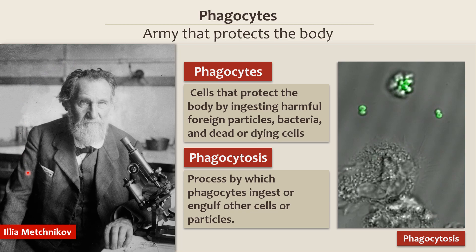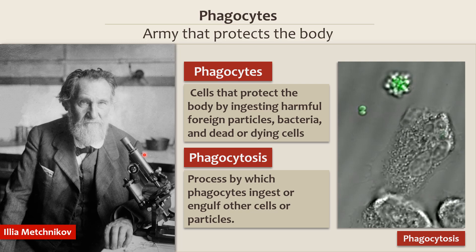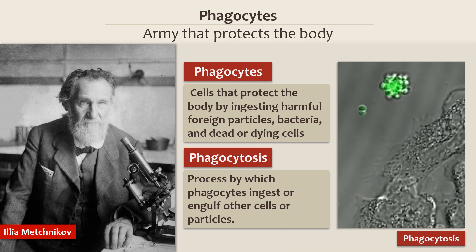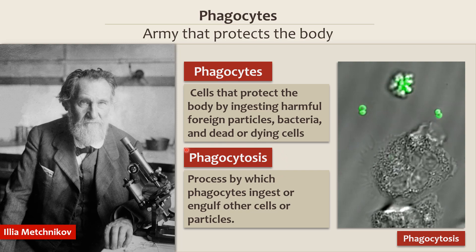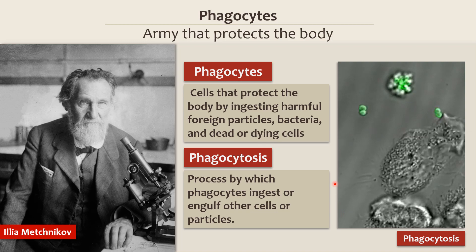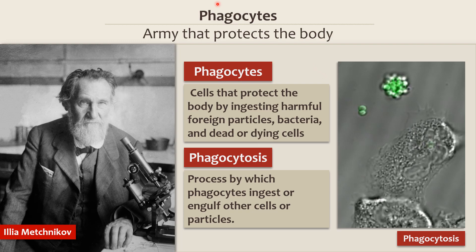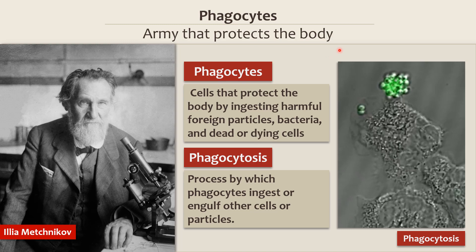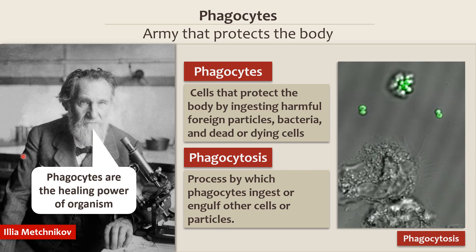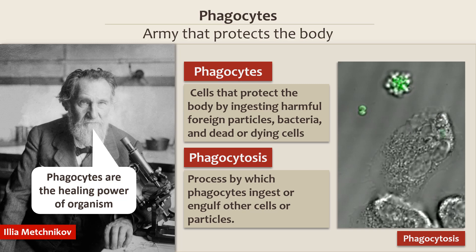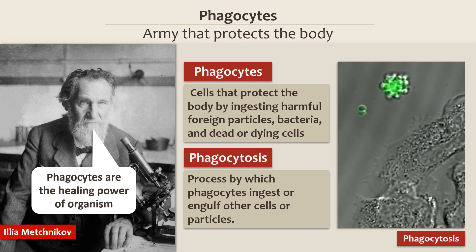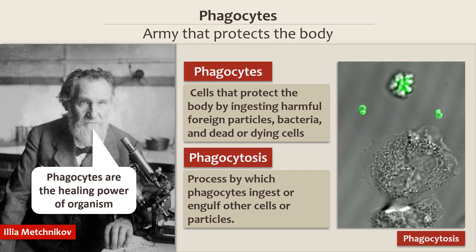Ilya Mechnikov, a pupil of Karazin University, took the first step toward answering the question about immunity. In 1882, he discovered phagocytes — cells that absorb bacteria — and coined the term phagocytosis for the process of absorption of bacteria by phagocytes. If Rudolf Virchow compared the organism with the state and cells with citizens, Mechnikov compared phagocytes with an army that protects the state from pathogenic enemies. Referring to Hippocrates, Mechnikov pointed out that phagocytes were what was really standing behind the healing power of the organism. The discovery of this protective mechanism marked the beginning of understanding of the body's immune response to pathogens and started the new science of immunology.